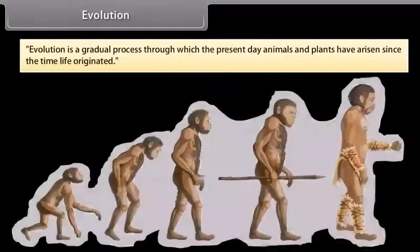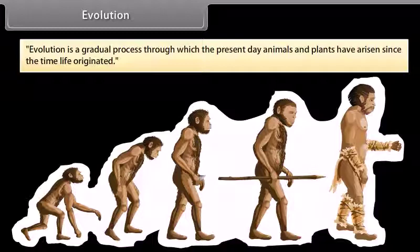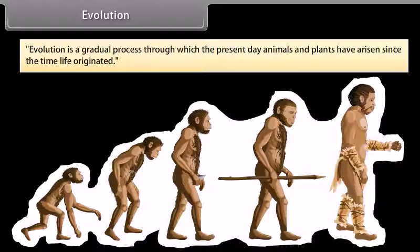Evolution is a gradual process through which present-day animals and plants have arisen since the time life originated.